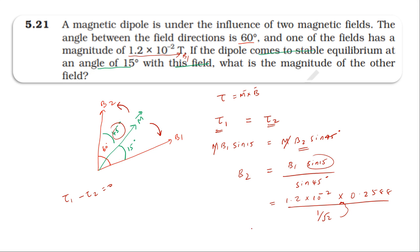Simplifying, B₂ comes out to be 4.392 × 10^-3 Tesla. Rounding off, the final answer is 4.4 × 10^-3 Tesla.